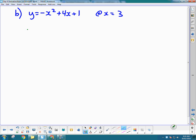So to find the slope, it's m equals the limit as h approaches 0 of f at a, well, let's actually sub in a right now. So, 3 plus h minus f at 3 all over h.